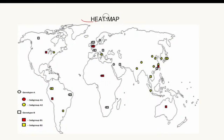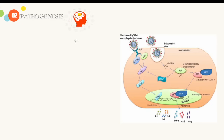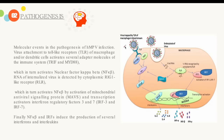This slide shows a heat map of HMPV genotypes A1, A2, B1, and B2. In India, genotype A is mostly prevalent, and in China, genotype A subgroup A2 is dominant. The virus is also prevalent across Europe, the USA, Africa, and Australia.